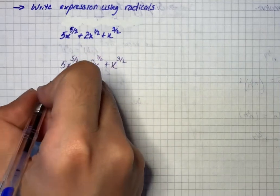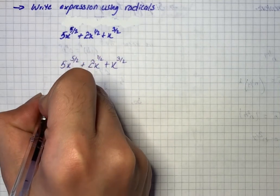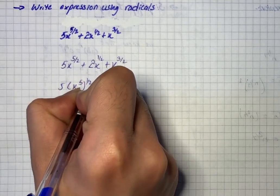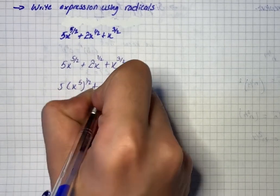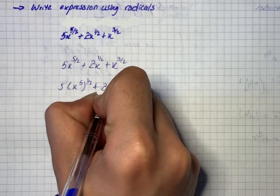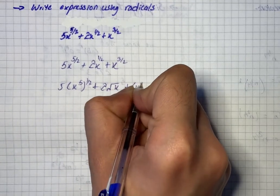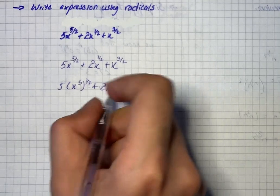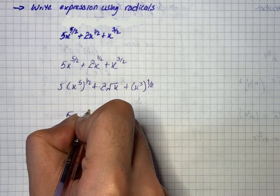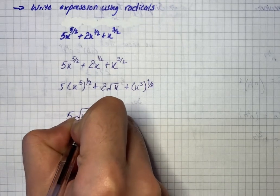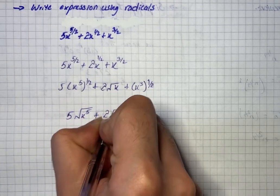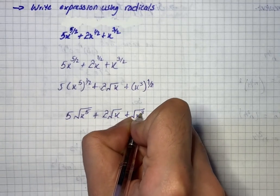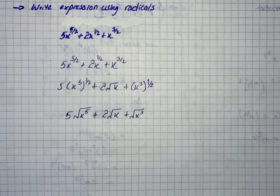Our expression can be written as 5 times x^(5/2), which equals 5 under root of x^5, plus 2 times x^(1/2), which equals 2 under root x, plus x^(3/2), which equals under root x^3. This is the required expression in radical form.